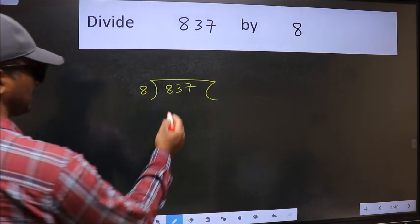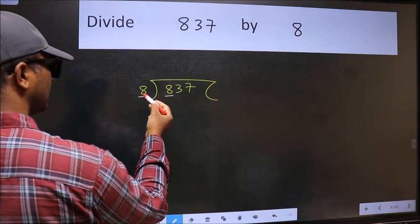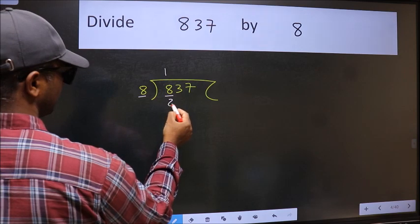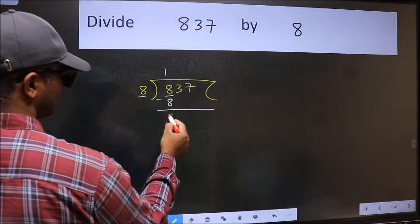Next. Here we have 8 and 8 here. When do we get 8 in the 8 table? 8 once is 8. Now we should subtract. We get 0.